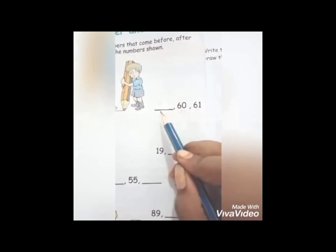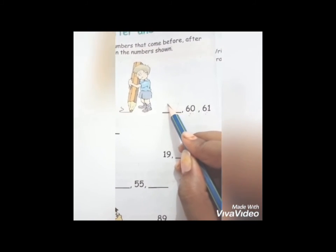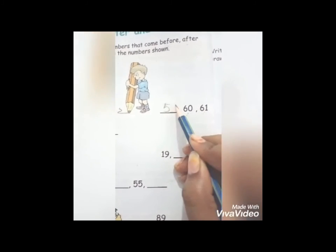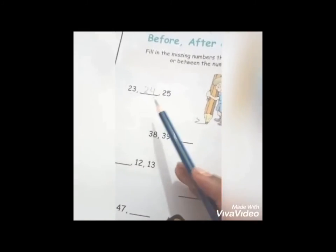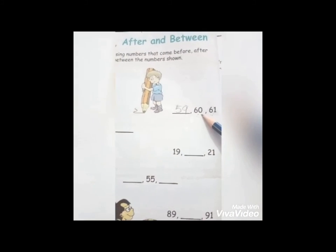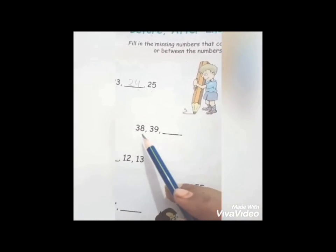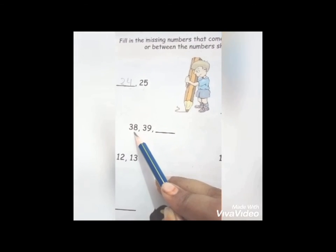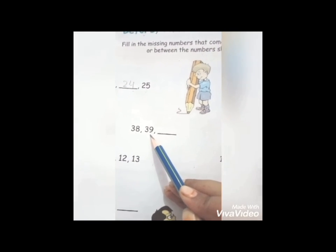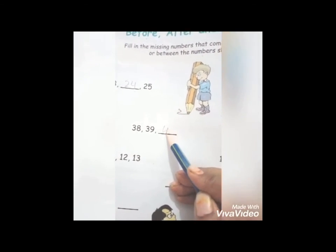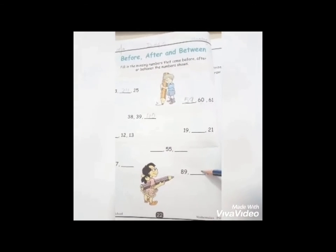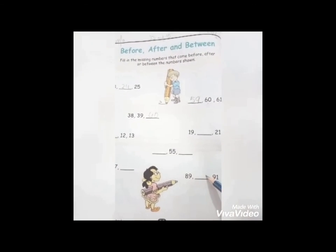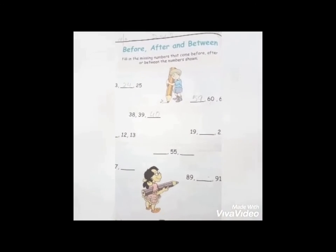What comes before 60? And what comes after 30? Later — 89, 40. Now the rest of the page you will do yourself, with your mother's help to fill this page.